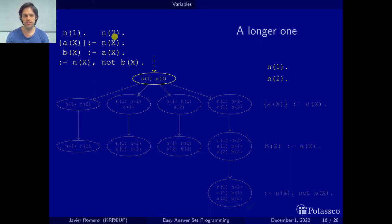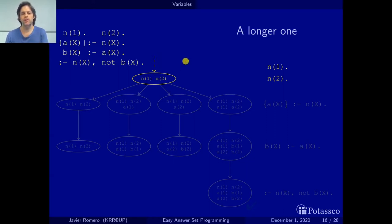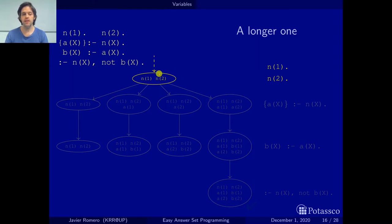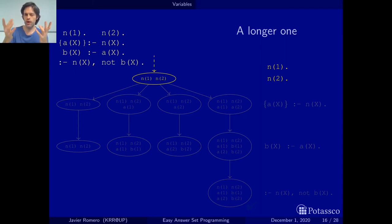We have the facts n1 and n2, so we start from the empty set, apply them, and end up with the set {n1, n2}. Facts do not depend on any other atoms, so we can apply all of them at the beginning. From now on, it's clear that when we want to find the answer sets of our program, we can start by saying the facts belong to the answer set. In this case we start with the set containing n1 and n2.